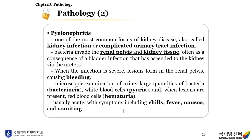Pyelonephritis is one of the most common forms of kidney disease, also called kidney infection or complicated urinary tract infection. Bacteria embed in the renal pelvis and kidney tissue, often as a consequence of a bladder infection that has ascended to the kidney via the ureters. When the infection is severe, lesions form in the renal pelvis causing bleeding. On microscopic examination of urine, we can see large quantities of bacteria—this is called bacteriuria—and white blood cells in the urine, called pyuria. When red blood cells are present, this is called hematuria.